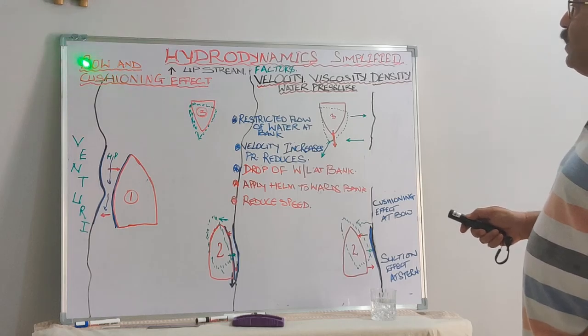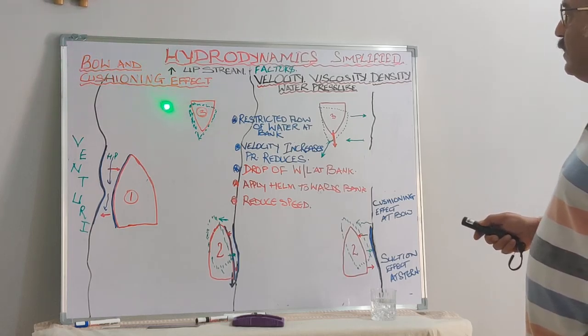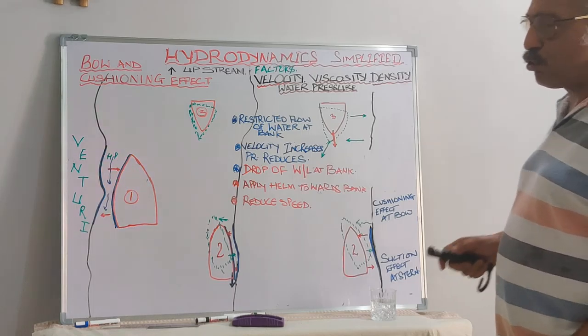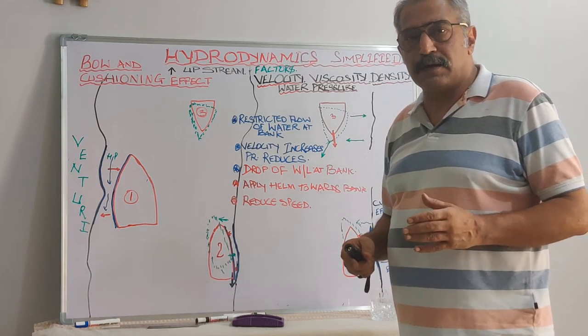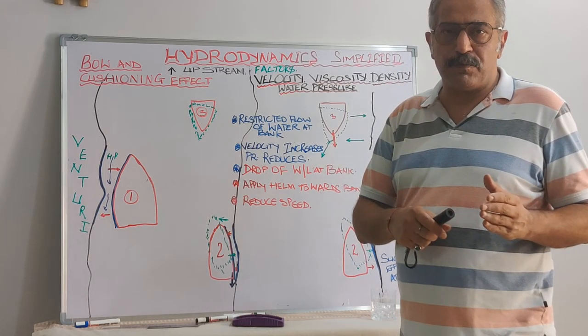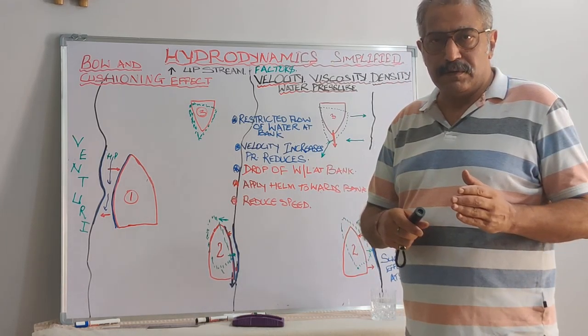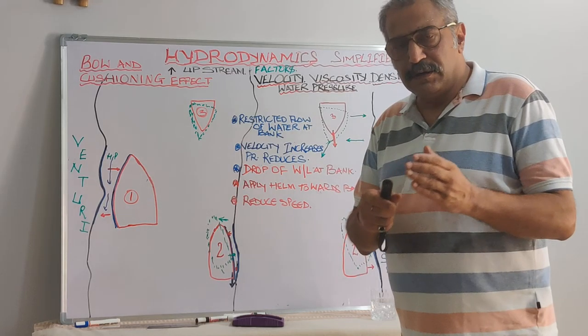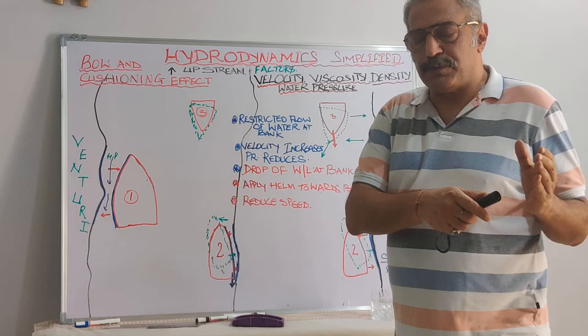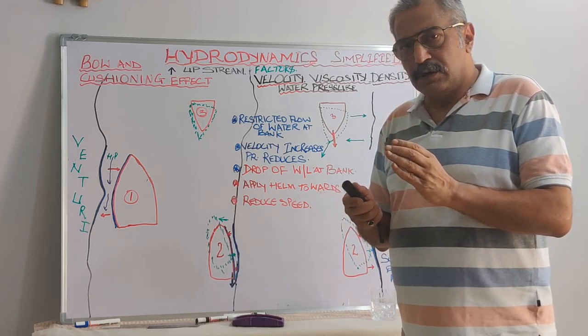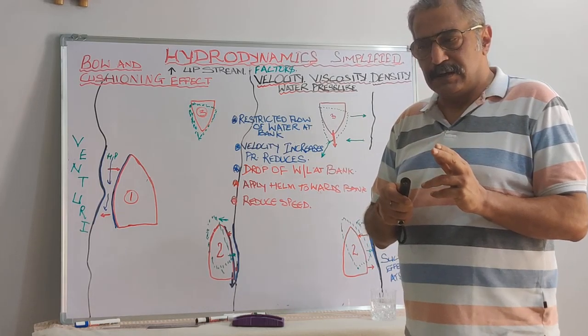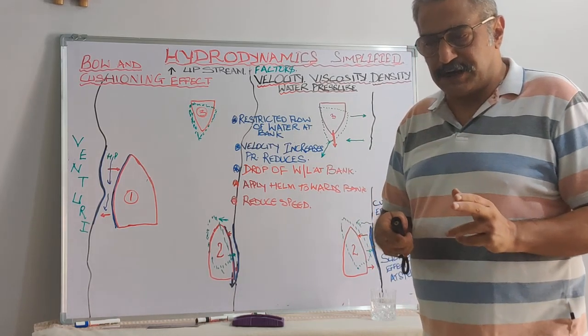Therefore, when we talk about the bow cushioning effect, the main thing is, if the vessel is close to the bank of the channel, subject to her draft, subject to her underwater volume of displacement, she will encounter an equal amount of effect which is going to be directly proportional to the draft, to the UKC and the speed, and also what we discussed in our previous lectures.